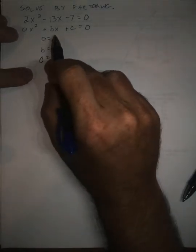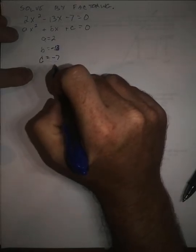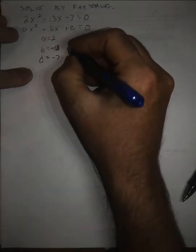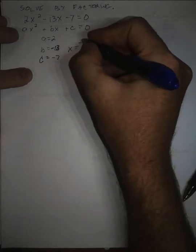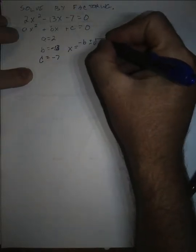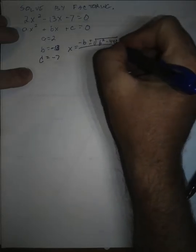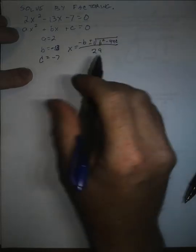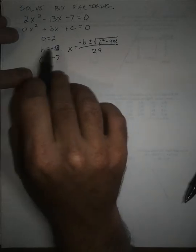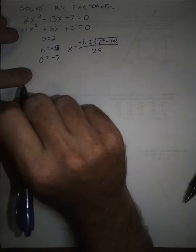And you need to know these anyway if you wanted to use something like the quadratic formula. Because when we write x is equal to negative b plus or minus square root b squared minus 4ac all over 2a, we're talking about this a, this b, and this c. So recognizing this form and using it is important.